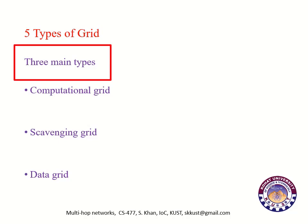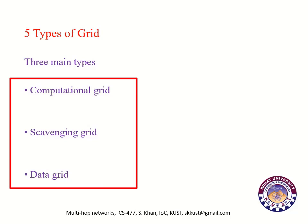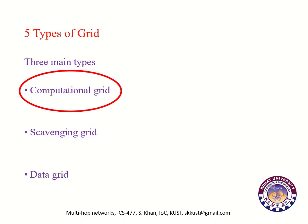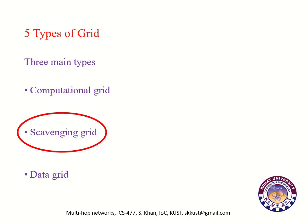Types of grid computing: There are three main types of grid computing. Number one: computational grid. Number two: scavenging grid. Number three: data grid. A computational grid is focused on resources specifically for computing power, that is CPU power. In this type of grid, most of the machines are high performance servers. Scavenging grid is most commonly used with a large number of simple desktop machines. Machines are scavenged for available CPU and other resources. Owners of the desktop machines are normally given control over when their resources are available to participate in grid operations.